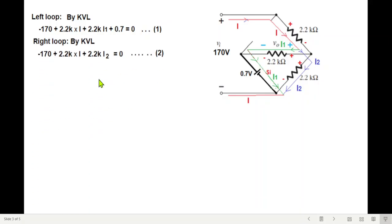Now we take the equation for the other loop. Again, we're going from here, minus 170. This one remains same, 2.2I. And now this one is 2.2K I2. So 2.2K I2 equals 0.